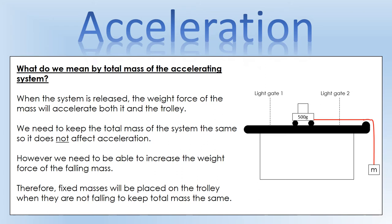The weight force of the masses hanging over the side is going to be accelerating two things: itself and the trolley. If we want to know the relationship between resultant force and acceleration, we need to keep that total mass of the system the same the whole time. To get around this, we place fixed masses on the trolley itself. When they're not on the falling mass hanger, they're on the trolley, so the total mass of the system stays the same.